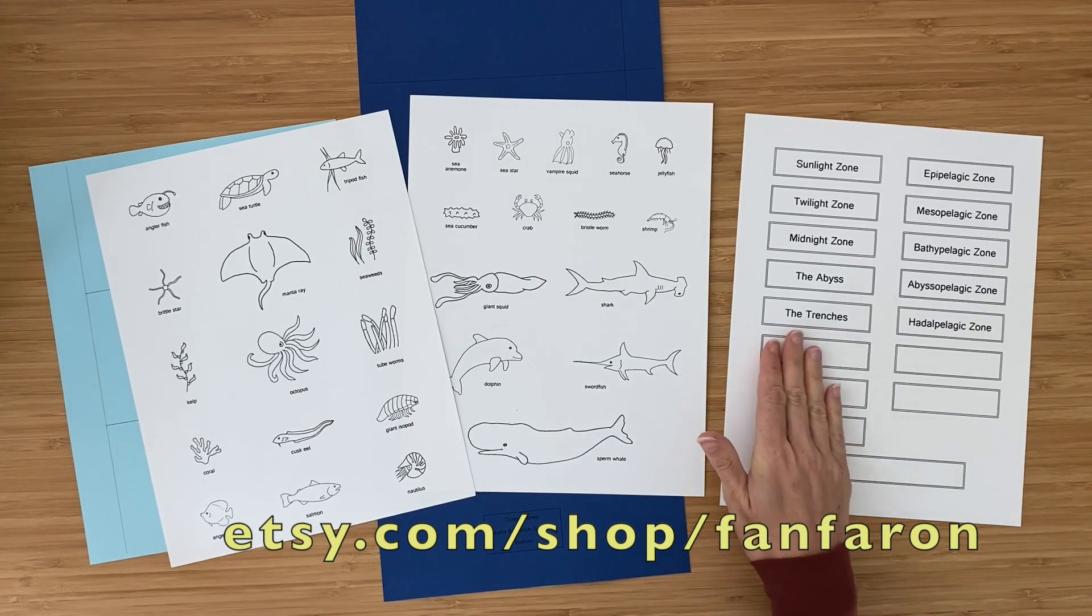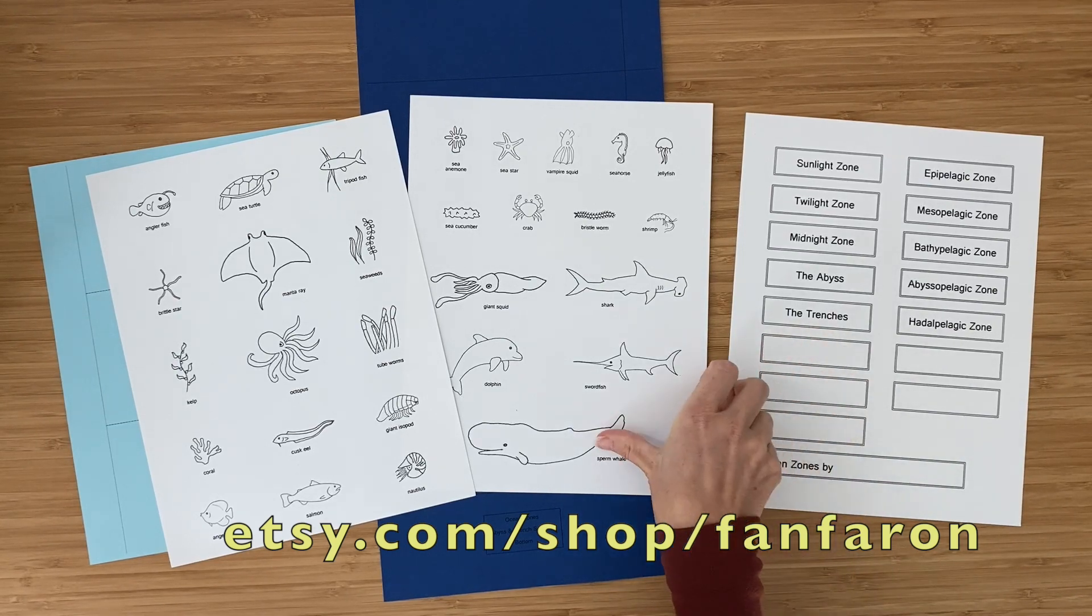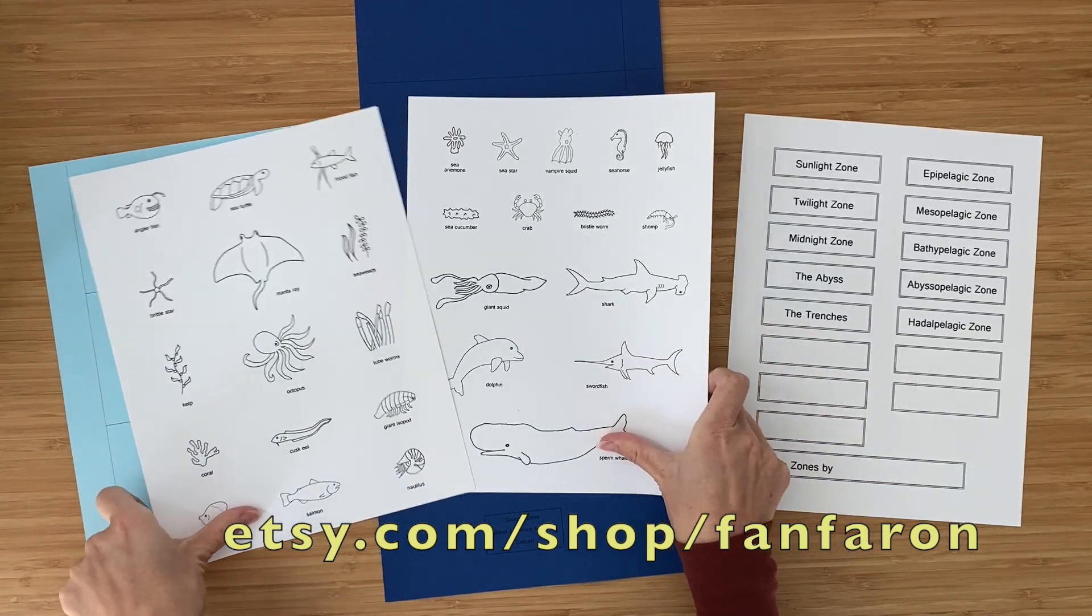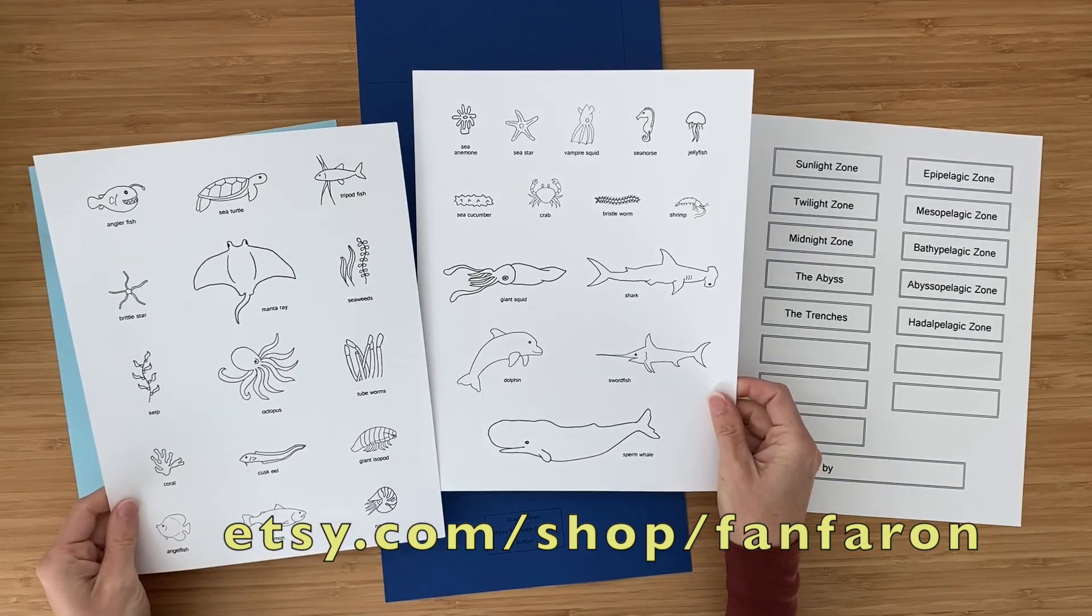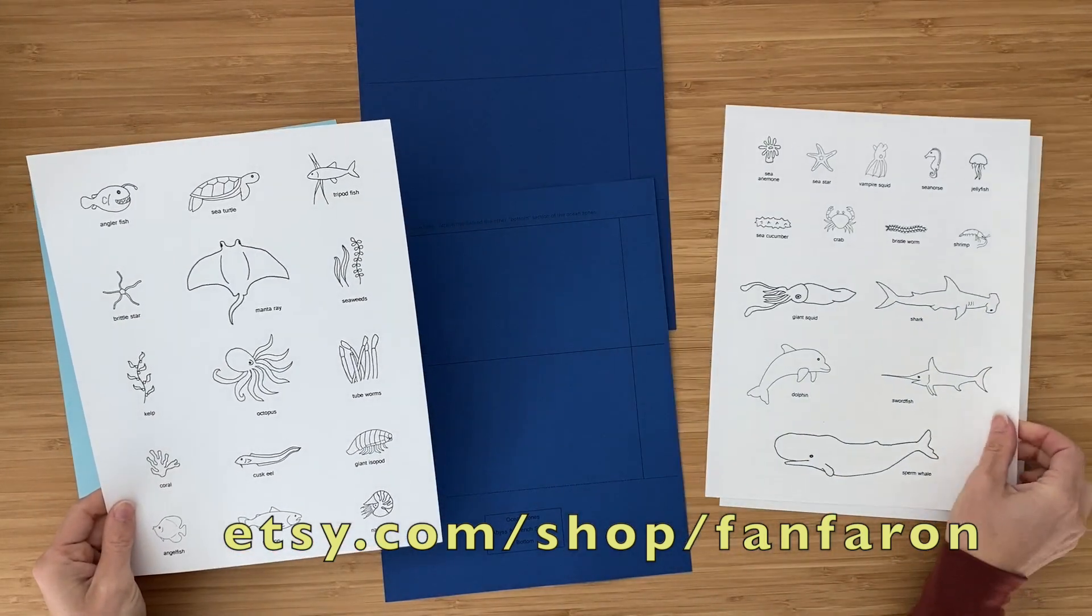If you are making the ocean zones project with all five zones, of course your project is going to look a little bit different. You have more labels for each of those zones, and then I've added in some sea life that lives in the bottom zones as well for you to color.